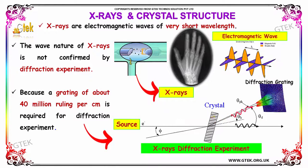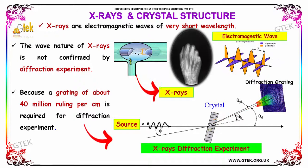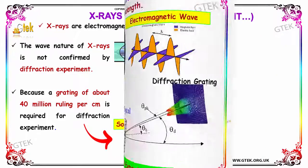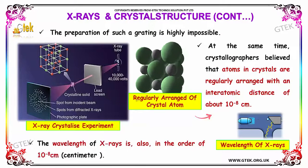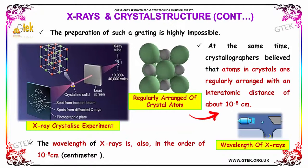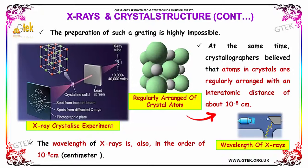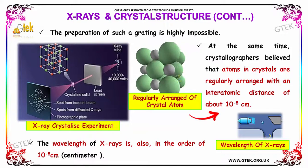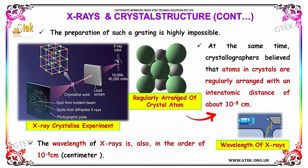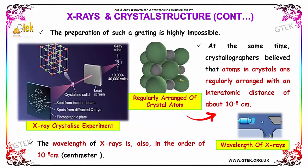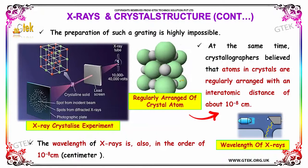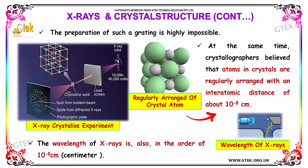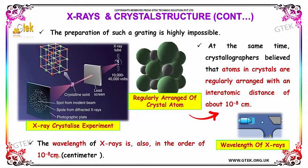Because a grating of about 40 million lines per centimeter is required for diffraction experiments, and the preparation of such a grating is really impossible. At the same time, crystallographers believe that the atoms in a crystal are regularly arranged with an interatomic distance of about 10⁻⁸ centimeters. The wavelength of X-rays is also in the order of 10⁻⁸ centimeters.